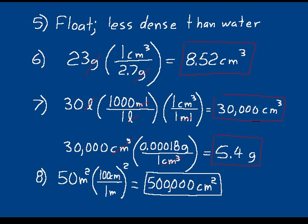The last problem was a review from lesson 3: convert 50 meters squared to centimeters squared. Using the shortcut — for area units, multiply by the same unit multiplier twice — that's 100 centimeters over 1 meter, squared. So 50 times 100 times 100 equals 500,000 centimeters squared. Don't forget to multiply by 100 twice for the numerical part.